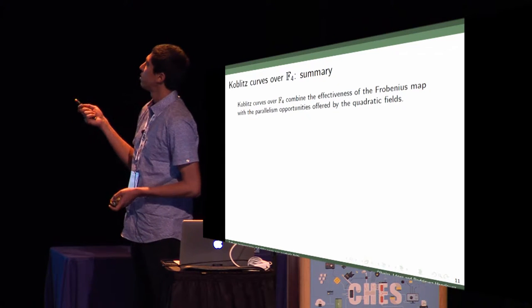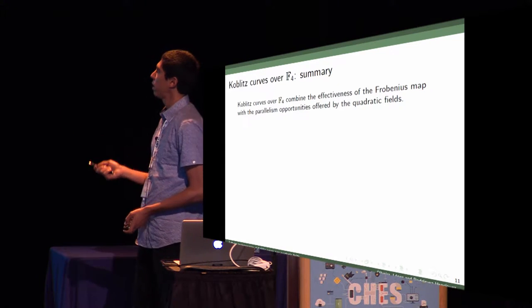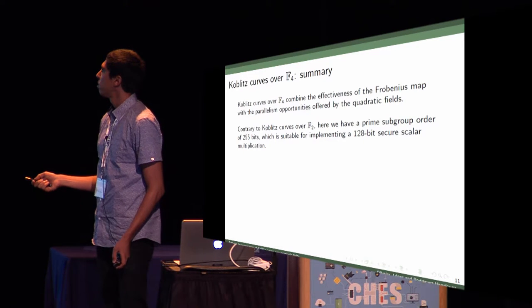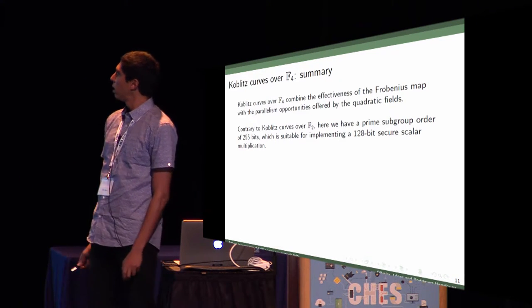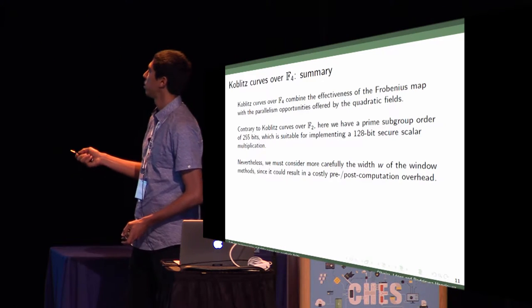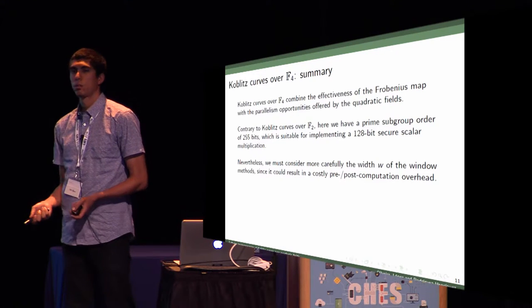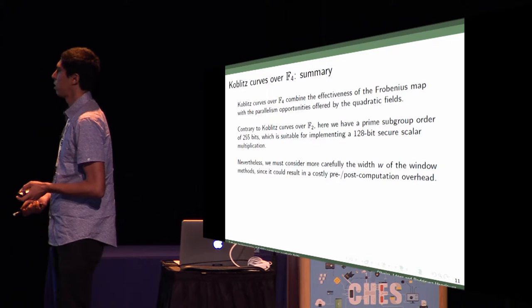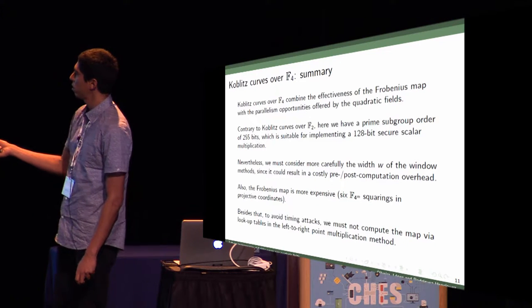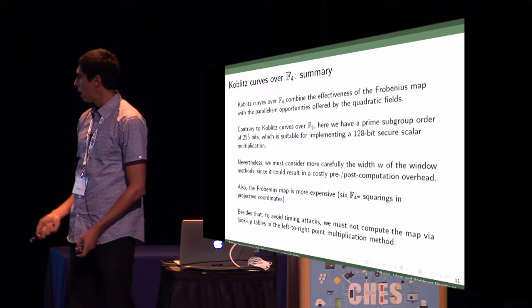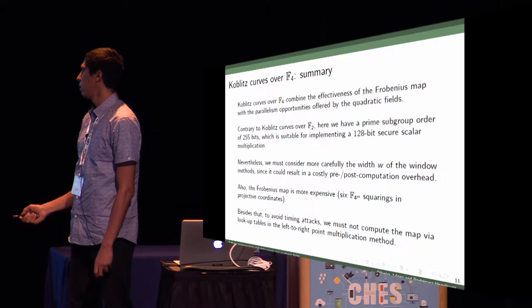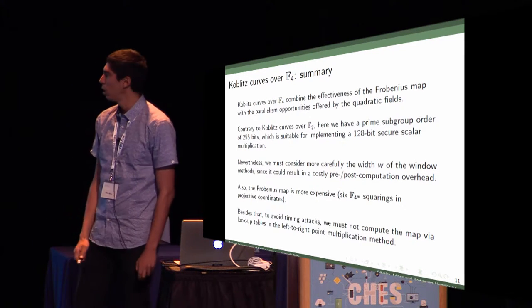As a summary, this approach combines the effectiveness of the Frobenius map with the parallelism opportunities given by quadratic fields. We have a subgroup order of 255 bits, which is very nice for implementing this security level. But we have to be careful with the selection of width W, because the pre- or post-computation cost can be very costly. Also, we have to be careful with the Frobenius map, because now it's more expensive. We need six squarings in projective coordinates, and we cannot do it by lookup tables using multi-squaring, because in that case the implementation will be vulnerable to timing attacks.